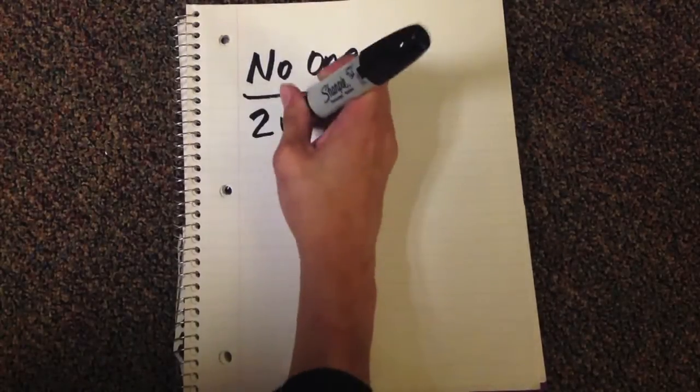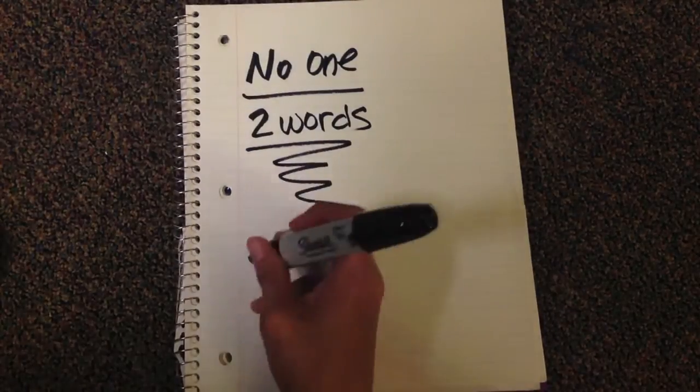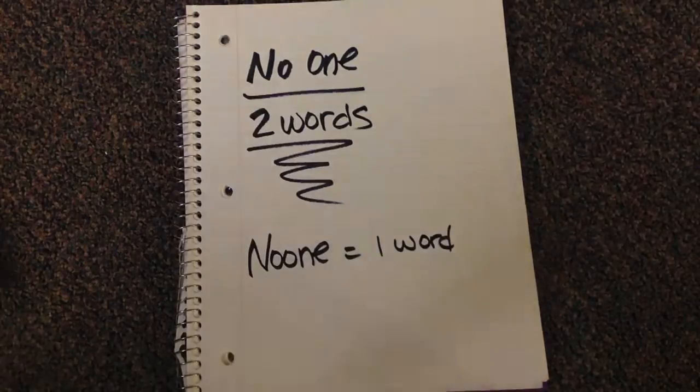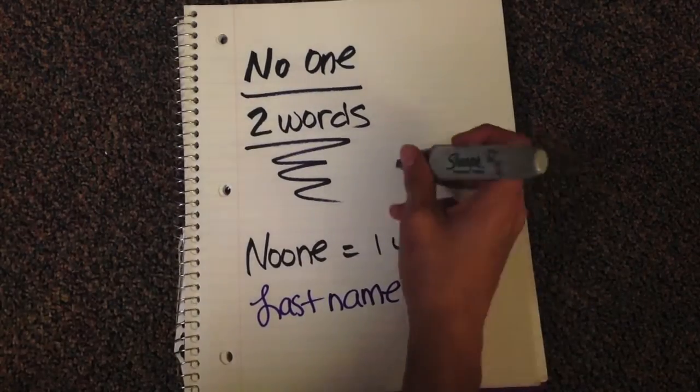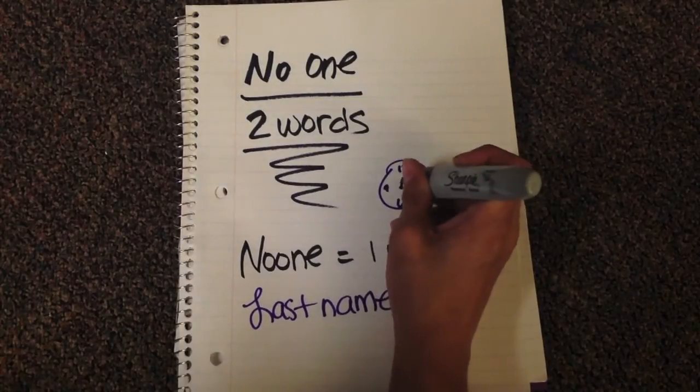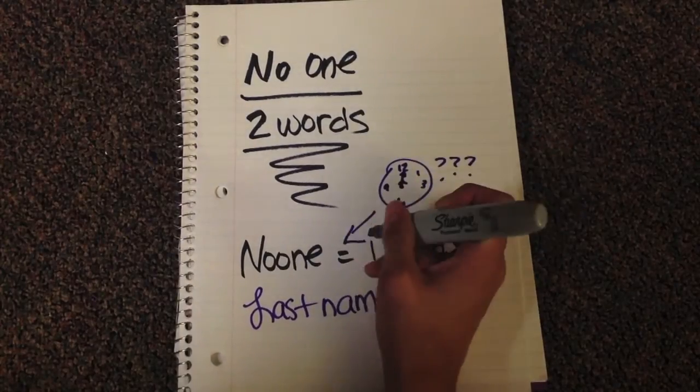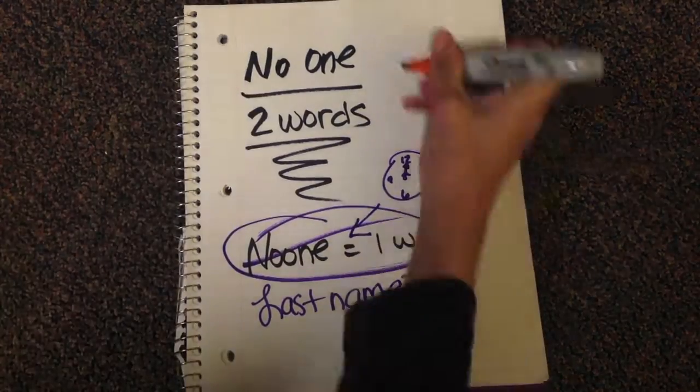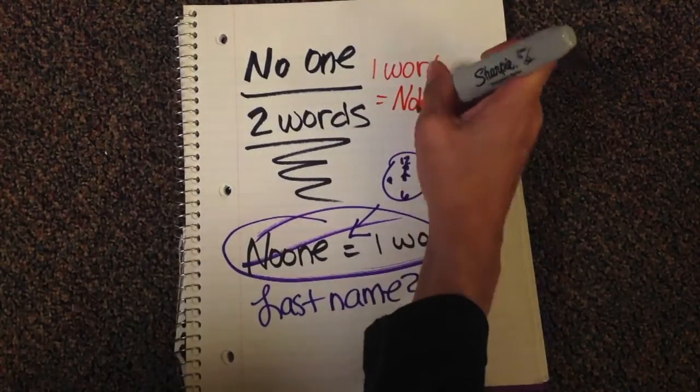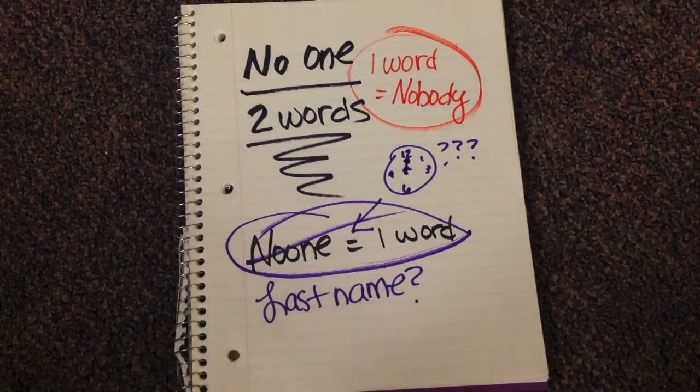Alright, now before we move on to our next topic, I want to get to one quick thing, and that is the word no one. No one is two words. If you put it as one, that is noon. Or noonie or noona. That is the last name of someone. Or probably a British way to spell noon. Anyway, not the point. No one is two words. Alright, if you want to use one, you're going to have to use the word nobody. End of subject. Okay, moving on.